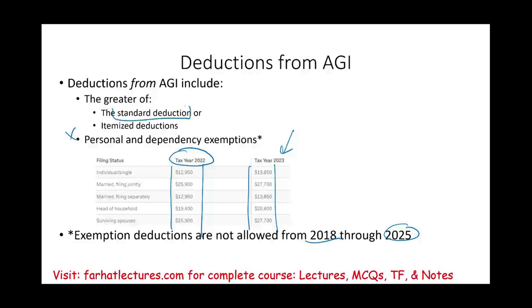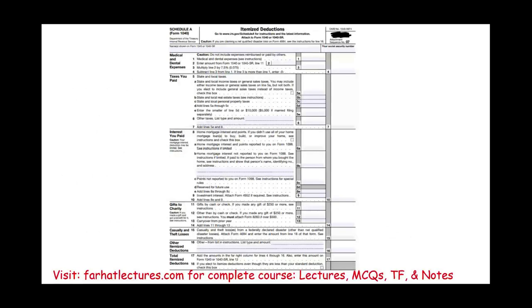You can either use the standard deduction, which is listed here and given to you by the government based on your filing status, or itemized deductions. What are the itemized deductions? We're going to have a whole chapter about itemized deductions, but we need to take a look at them here. There's a Schedule A. On Schedule A, you add up all your medical and dental expenses, taxes you paid, interest you paid, gifts to charities, casualty and theft losses, and other itemized deductions. Whatever you qualify for, you add them up.